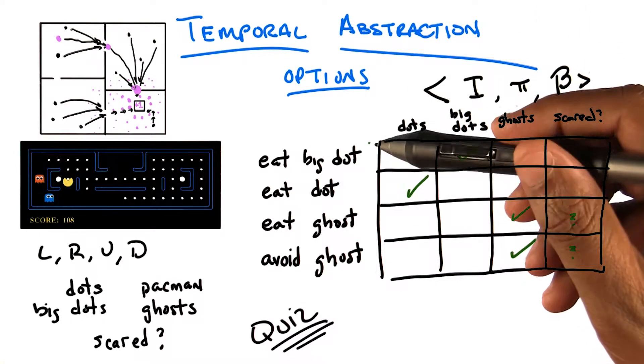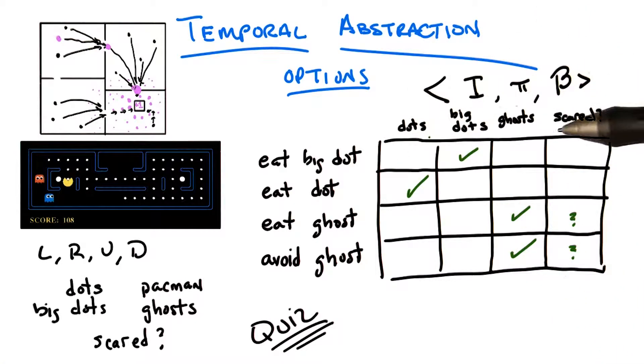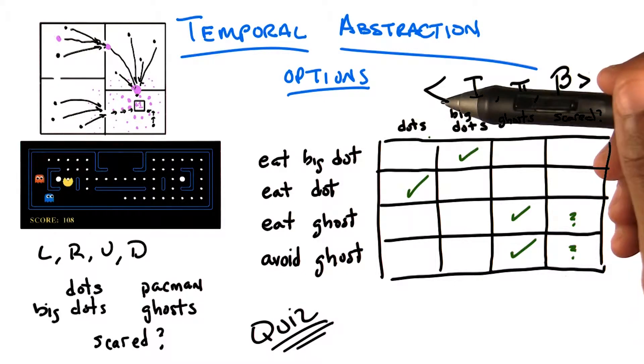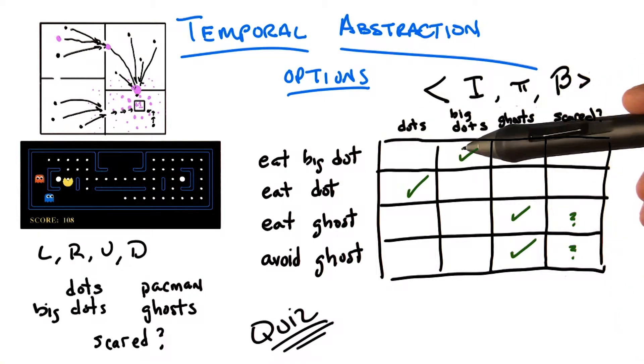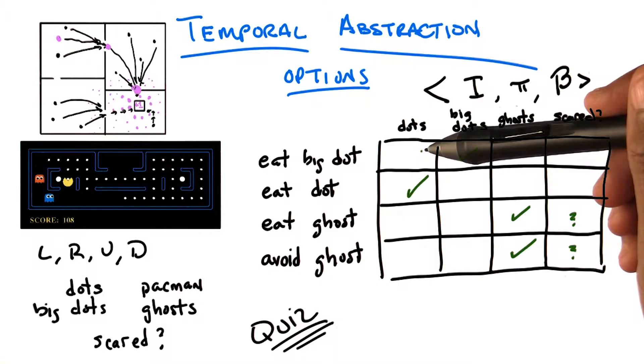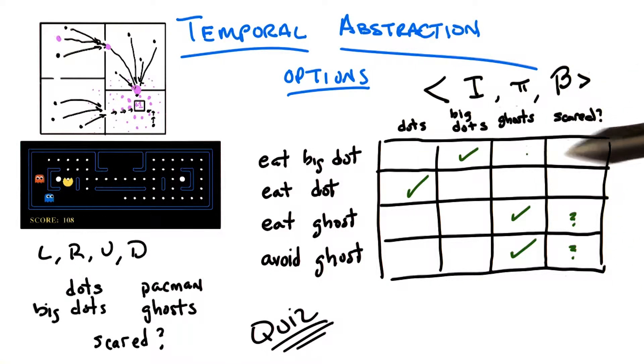So maybe eating a big dot or eating a dot really requires that I know almost everything. Except, in the worst case, eating a big dot doesn't require that I know where the little dots are, even if I need to worry about where the ghosts are and whether they're scared or not.